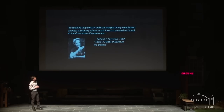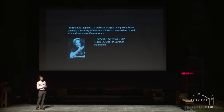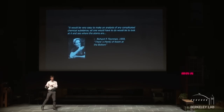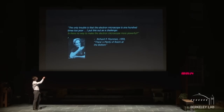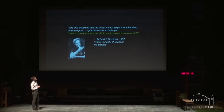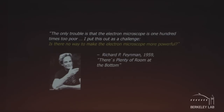It would be very easy to make an analysis of any complicated chemical substance. All one would have to do would be to look at it and see where all the atoms are. So this is a great idea — all you have to do is take a picture, look at where the atoms are, and you can figure out its real-world effect. But there was one problem in 1959, which he immediately told us: 'The only trouble is that the electron microscope is 100 times too poor. I put this out as a challenge — is there no way to make the electron microscope more powerful?' So Feynman gives us a great idea and then gives us a challenge: make these electron microscopes much more powerful.